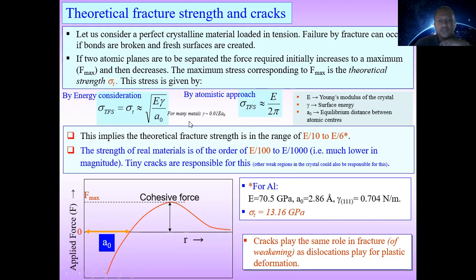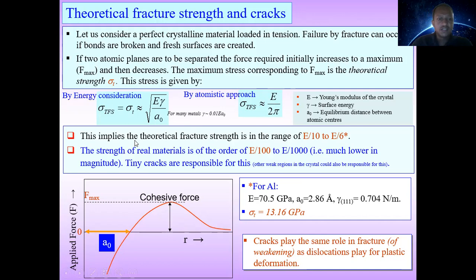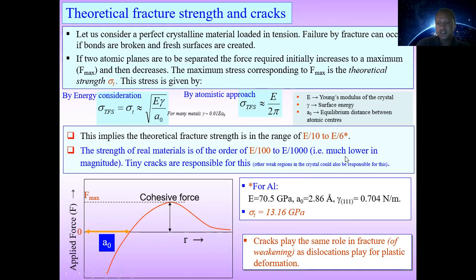By the atomic approach, we can represent the theoretical fracture strain sigma TFS as approximately E over 2pi. This implies that the theoretical fracture strength is in the range of Young's modulus over 10 to Young's modulus over 6. The strength of real materials is of the order of E over 100 to E over 1000, which is much lower in magnitude. Tiny cracks are responsible for this.